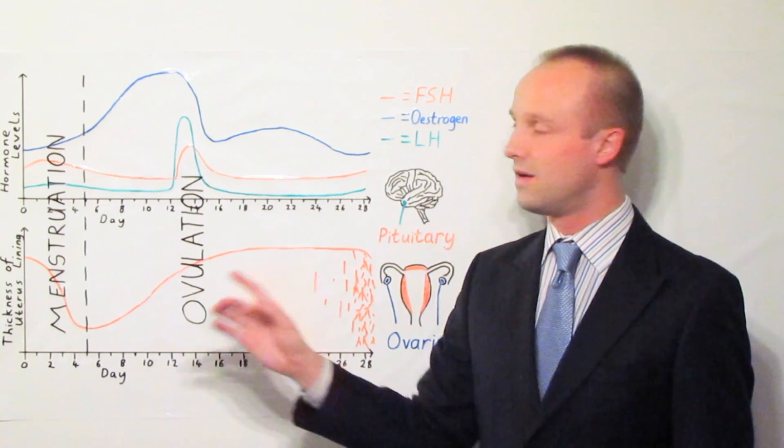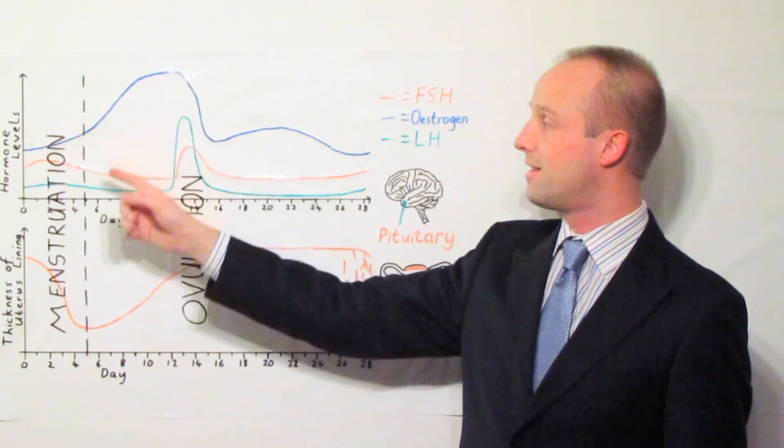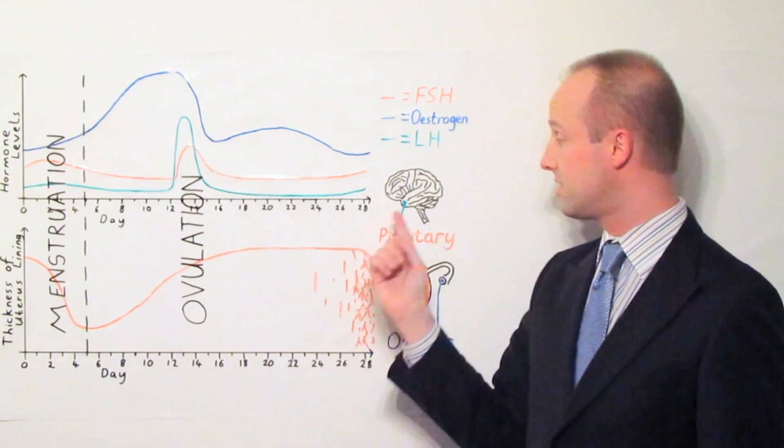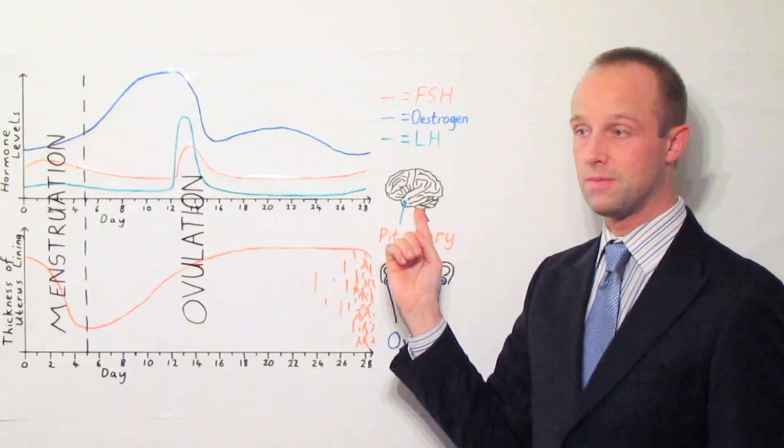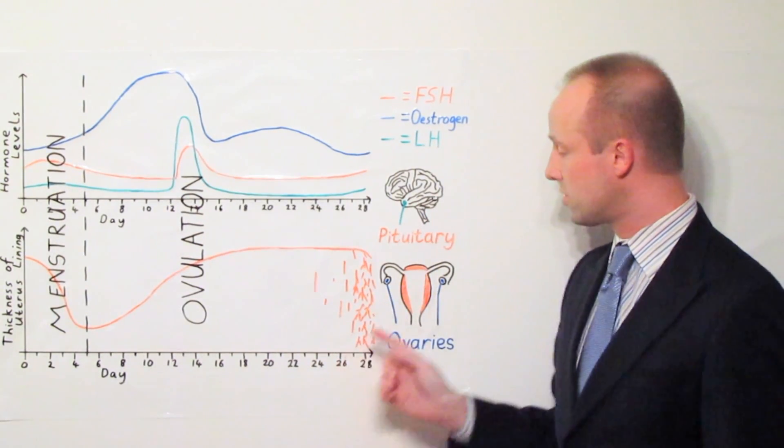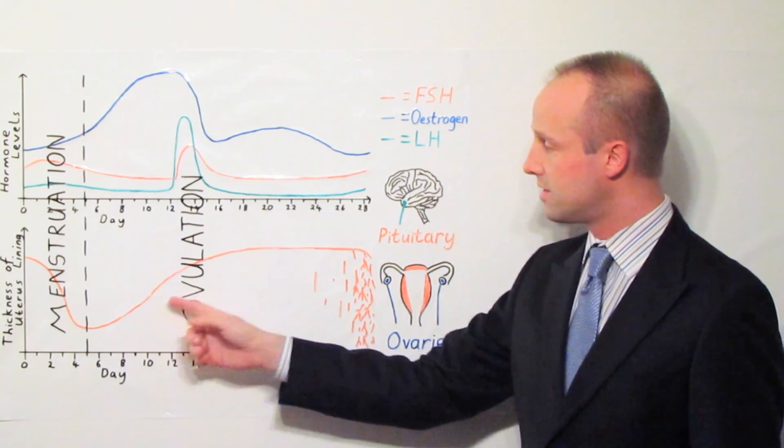Now oestrogen has two effects. Firstly, when it gets high like this, it reduces the levels of FSH. It stops the pituitary producing as much and it also causes the lining of the uterus just here to start to thicken.